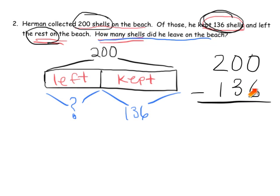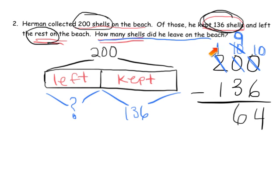So let's start subtracting. We need to unbundle because we have to take away 6 and we have nothing — so we're going to have to unbundle twice. We unbundle 100, leaving 1 hundred, and that gives us 10 tens. Now we unbundle a 10, leaving us with 9 tens, and that gives us 10 ones. 10 minus 6 is 4. 9 tens take away 3 tens gives us 6 tens. 1 hundred take away 1 hundred gives us 0 hundreds — we'll leave that blank. So the answer is 64.